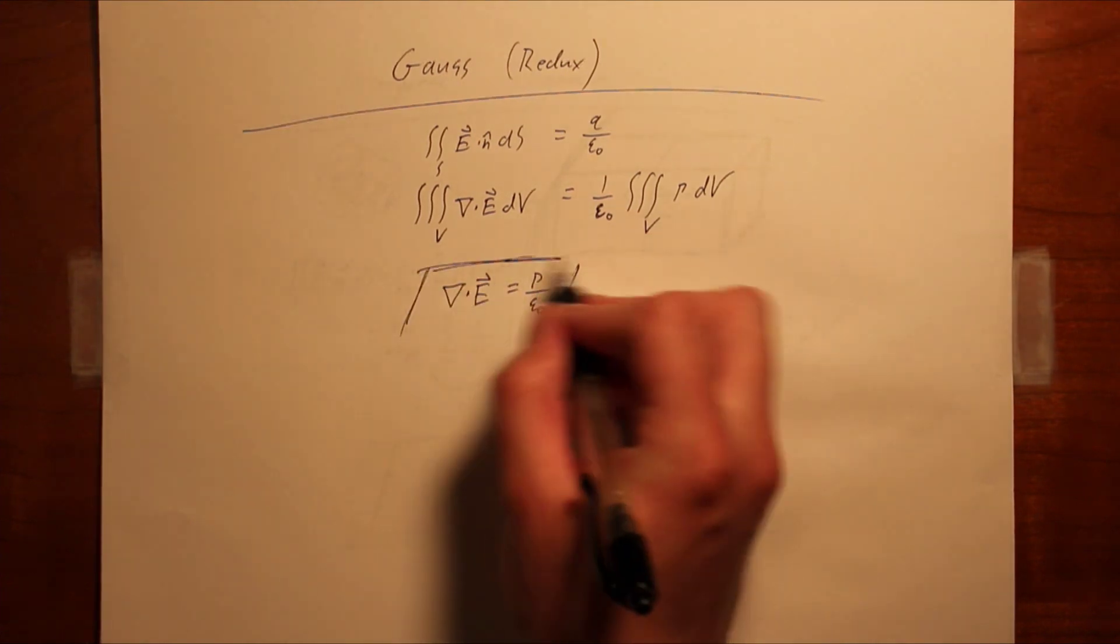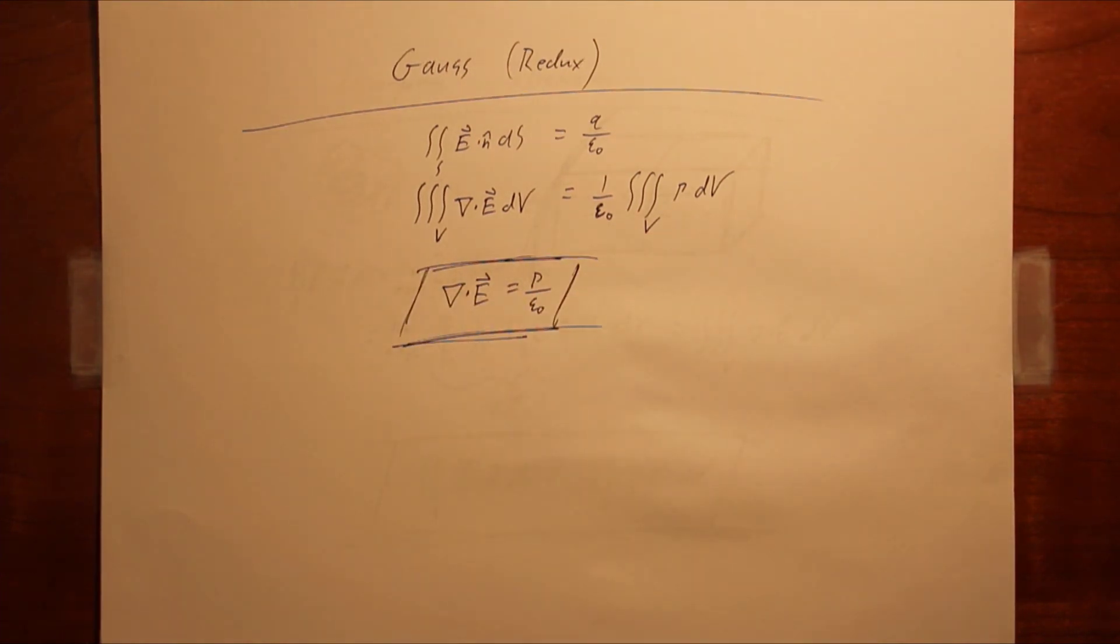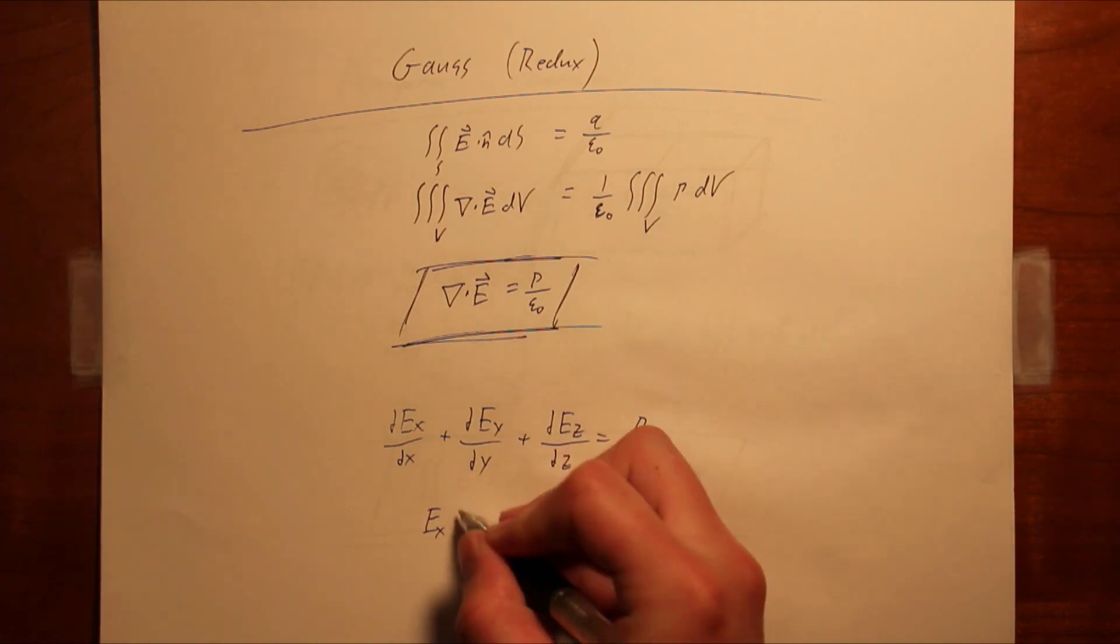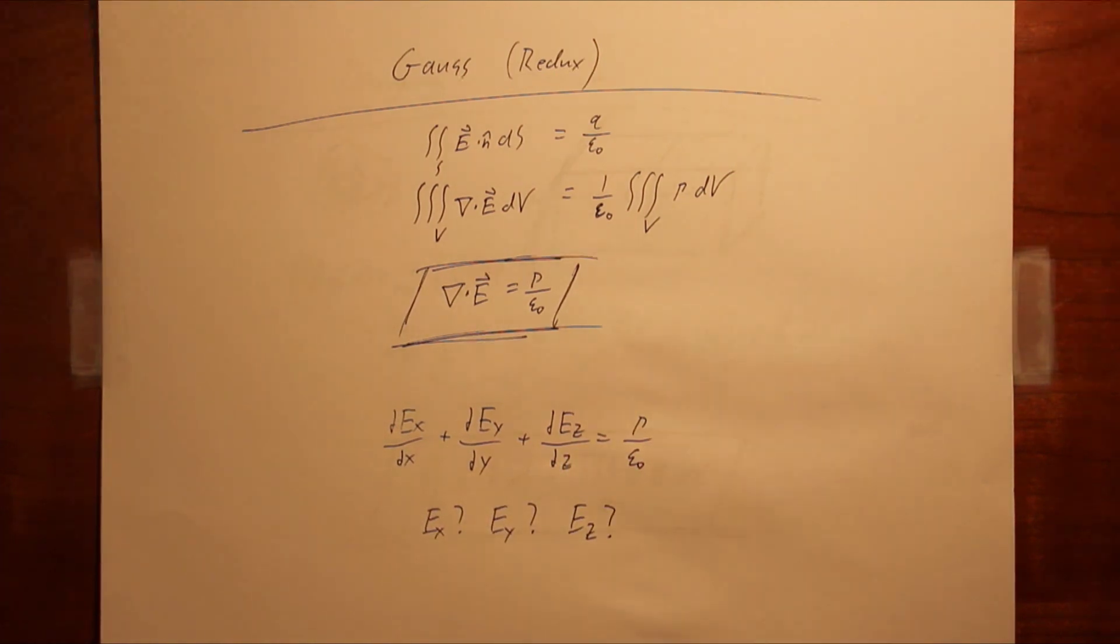This result is known as the differential form of Gauss's law, and it reduces the task of finding the electric field to knowing the charge density at a point and solving a partial differential equation. This equation, however, has three unknowns, making it rather unsolvable. To truly find the field requires the combination of the differential form of Gauss's law and the gradient. This combination employs a new del-based operation, the Laplacian, which allows the field to be found as a partial differential equation in one unknown, but that will be a topic for another film.